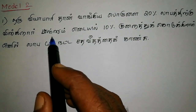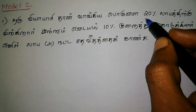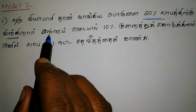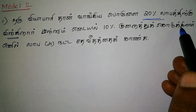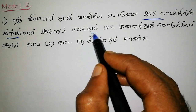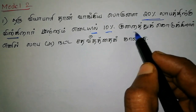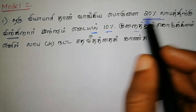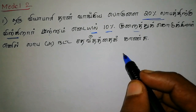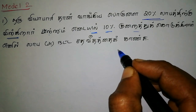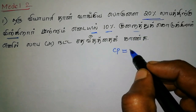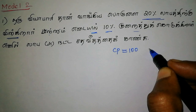Now there is another type. What are the types of terms? You can't get any money. So what we do is cost price. Cost price is 100. So what is the selling price?